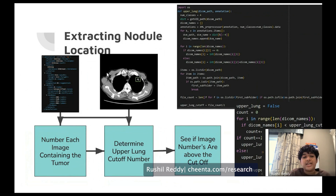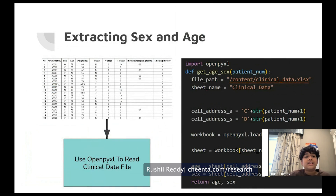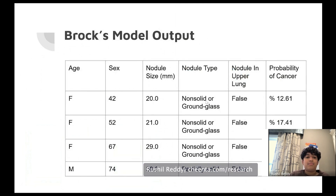For extracting nodule location, we loop through each 2D CT slice that has an annotation box, assign it a number, and check whether it falls in the top half — returning true if the nodule is in the upper lung, false otherwise. Sex and age are extracted directly from the clinical data Excel file using OpenPyXL. Example outputs show age, sex, nodule size, nodule type, and upper lung position, and the probability of cancer is then calculated.